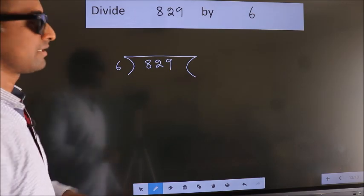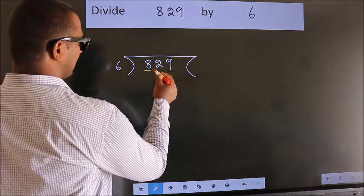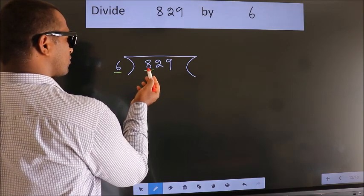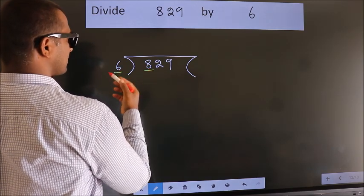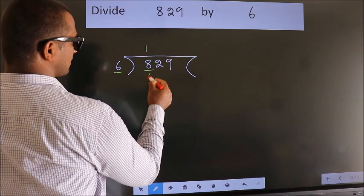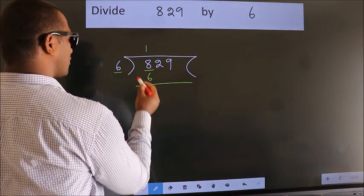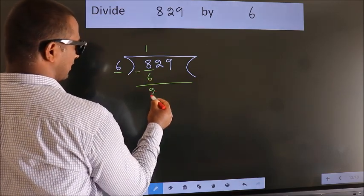Next, here we have 8, here 6. A number close to 8 in 6 table is 6 once 6. Now we should subtract, we get 2.